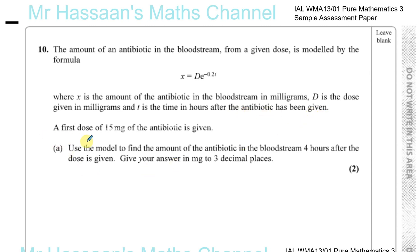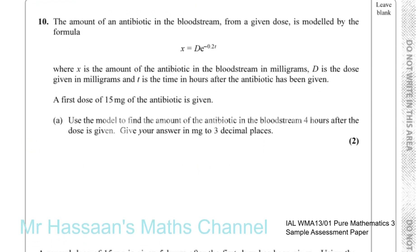A first dose of 15 milligrams of the antibiotic is given. Use the model to find the amount of the antibiotic in the bloodstream four hours after the dose is given. Give your answer in milligrams to three decimal places. So here we have the formula: X is the amount of the antibiotic in the bloodstream after T hours, D is the initial dose given, and you've got E to the power of minus 0.2 times T, which is the time in hours after it's given.